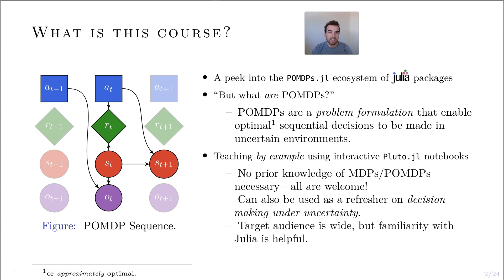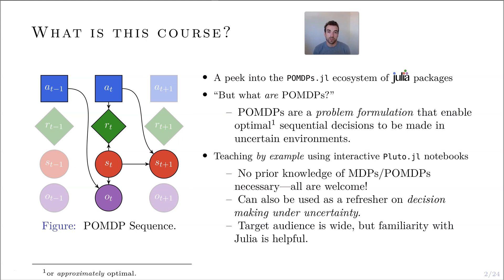So what exactly is this course? It's a peek into the POMDPs.jl ecosystem of Julia packages. POMDPs are a problem formulation that enable optimal or approximately optimal sequential decisions to be made in uncertain environments. I'll get into this in much more detail in some later lectures.